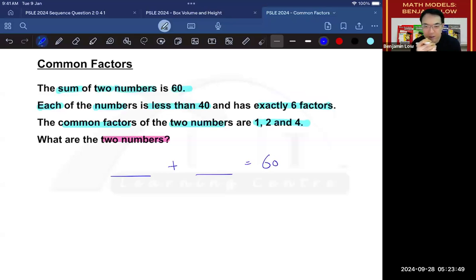We also know that the numbers must be less than 40. And so I'm going to put two things together. It is less than 40, and it has to be a multiple of 4, because if 4 is a factor, then the number needs to be a multiple of 4.